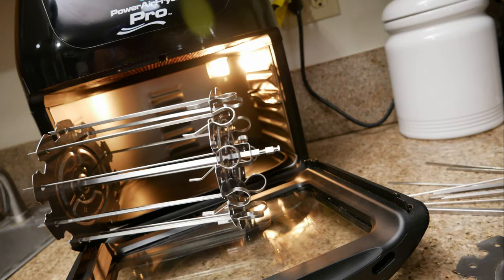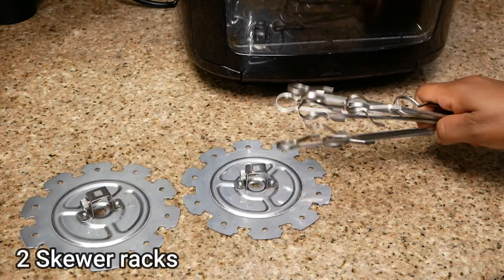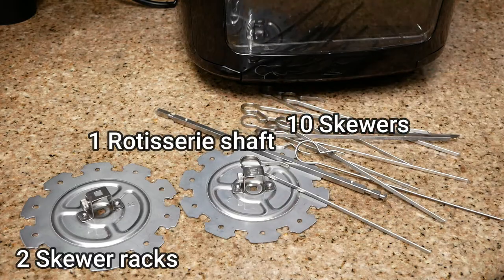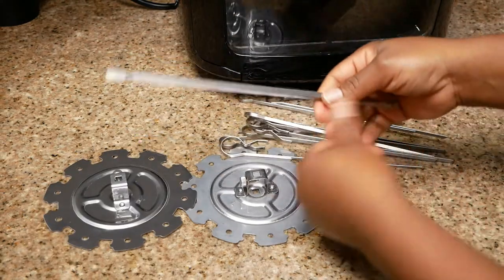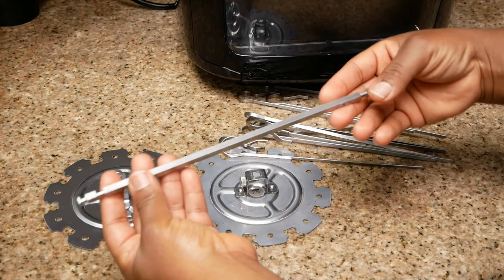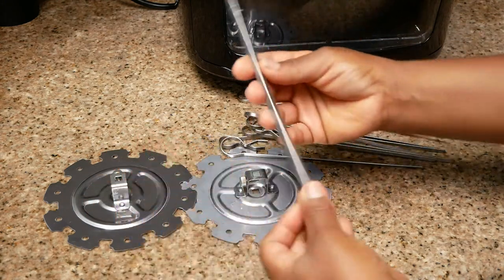Here are all of the components: you have two skewer racks, ten skewers, and one rotisserie shaft. Take a look at the shaft here. As you can see, on each end of the shaft there's a screw hole. Also note how the shaft is made—both ends are not identical. This is the left end.